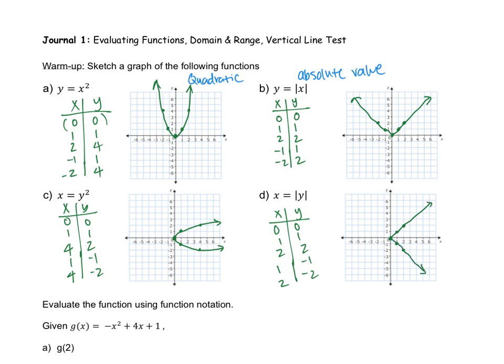I want to point out that these two sideways equations — because they're sideways, if I were to draw a vertical line, notice that it hits in two places. Whereas with the top functions, a vertical line only hits at one place. This is what we call the vertical line test, and it helps us determine if something is a function. These two are not functions because they fail the vertical line test — the vertical line hits in two areas. We'll be talking more about how to deal with these, but for now we're just learning how to graph them using a table.